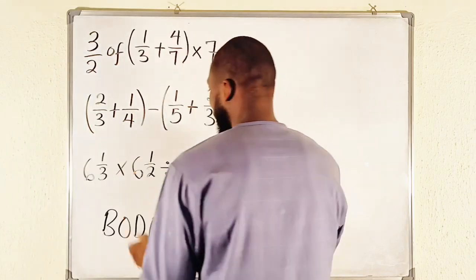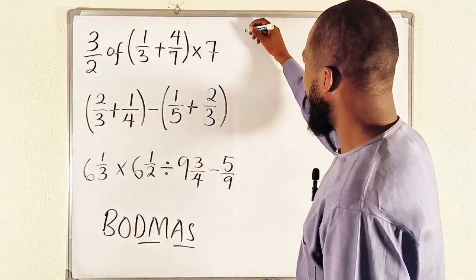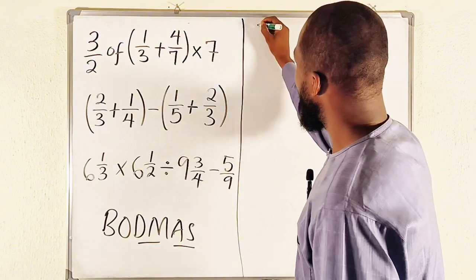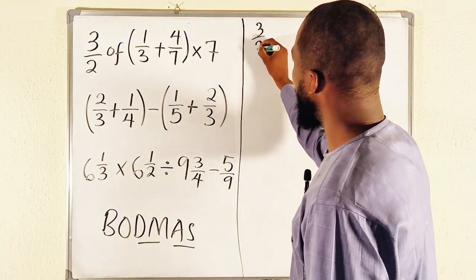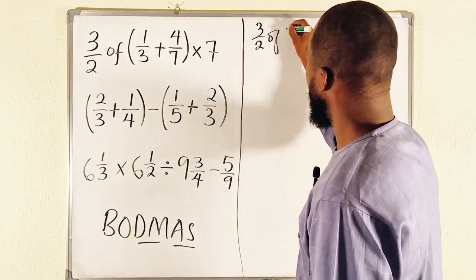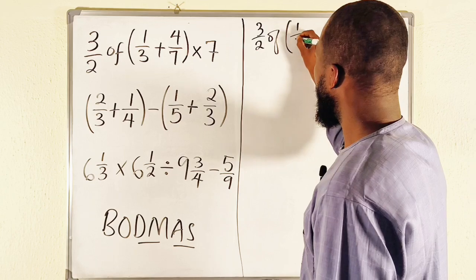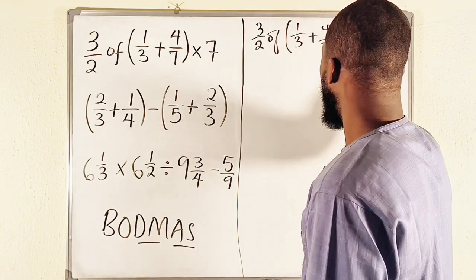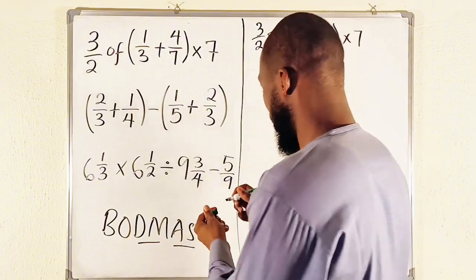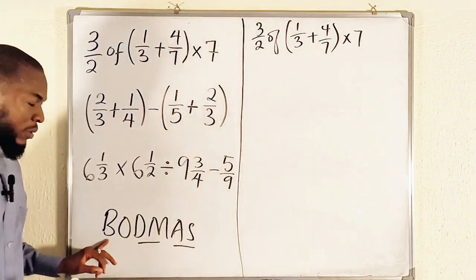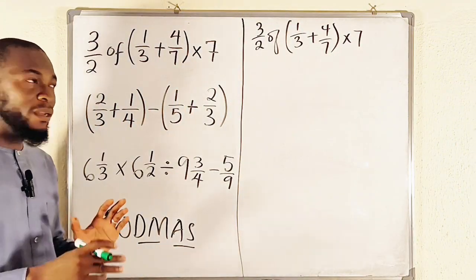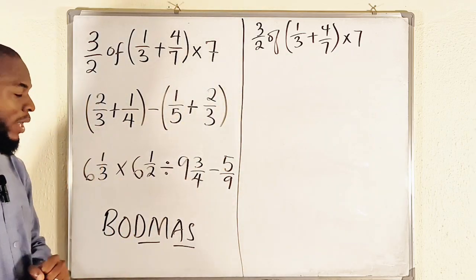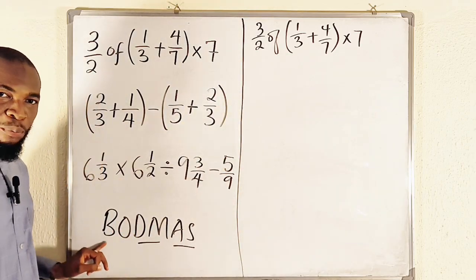Let us see how we can apply this. The first question: we have 3 divided by 2, of 1 divided by 3 plus 4 divided by 7, and multiplied by 7. Is a bracket available? Yes, since we have parentheses — they have the same power as brackets — so we have to deal with that bracket first.